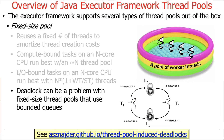One problem to be aware of: if you have a fixed-size thread pool with a bounded queue — where the queue feeding it has a limit — you can end up with deadlock. You can read more about that at the link on thread pool-induced deadlocks. We'll cover it in more detail later in the course.